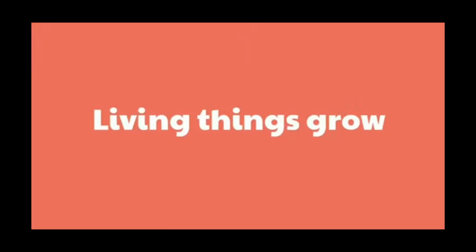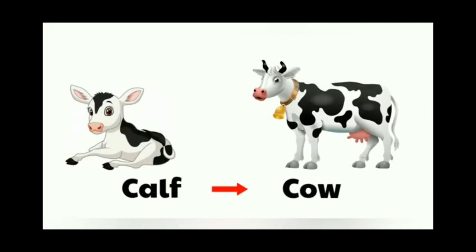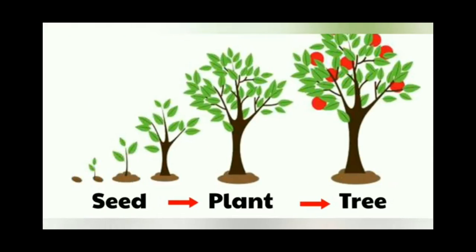Living things grow — they become bigger. For example, a baby grows into a child, which grows into a man. Non-living things cannot grow. A cow also grows: first it is small, then it becomes a full-grown cow. Plants also grow: first there is a seed, then a plant, then a tree. Seed grows into a plant, plant grows into a tree.